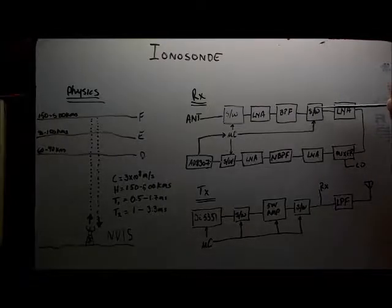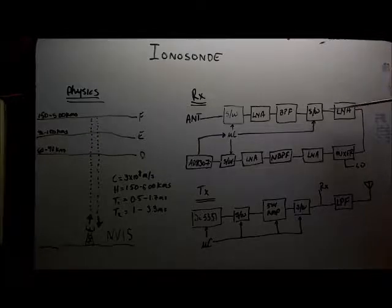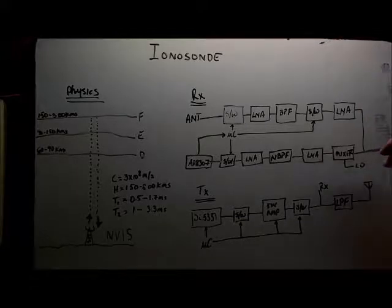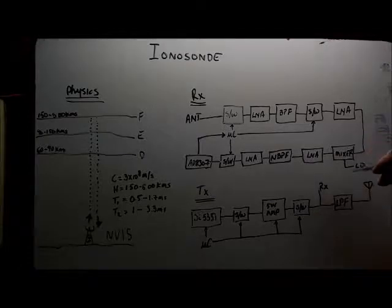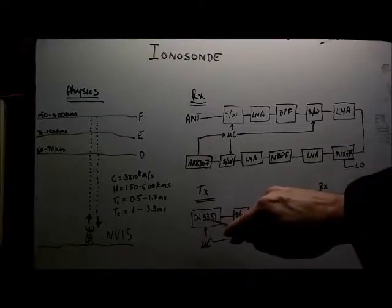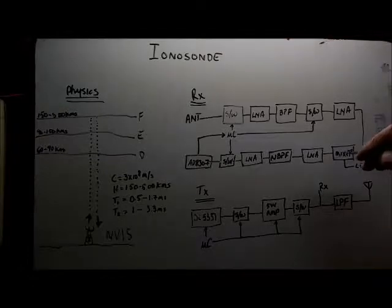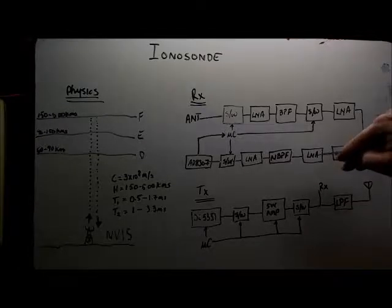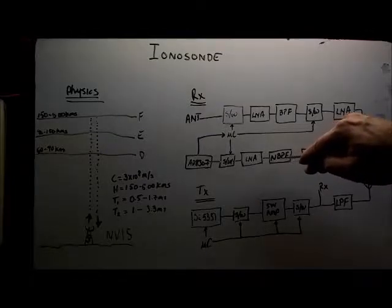There'll be a second switch here which I can stop the signal from proceeding. That'll go through another low noise amplifier which will feed into my mixer, and for this I'm planning to use an NE602. That'll be a local oscillator which will be coming from my SI5351. Again that local oscillator will be controlled by the microcontroller.